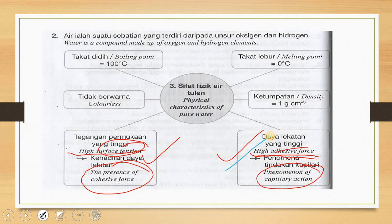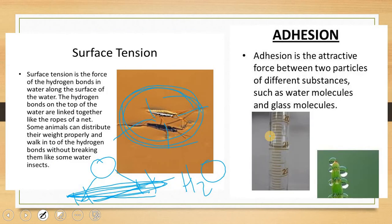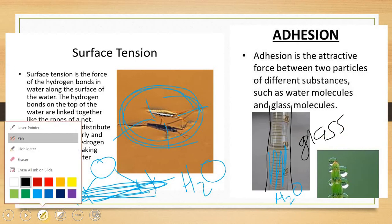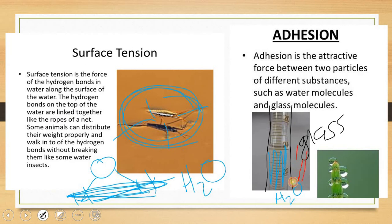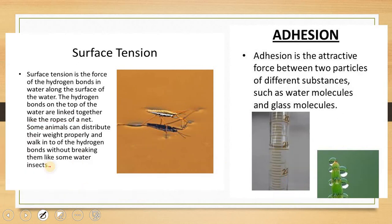Other than surface tension, we also have high adhesive force, or adhesion. Adhesion is the attractive force between two particles of different substances — for example, a water molecule and a glass molecule. So we have two different molecules: the water (H₂O molecule) and the glass on the outside. When these have attractive forces between them — the glass and the H₂O — then you have adhesion. The water sticks to the surface of the glass due to this attractive force.